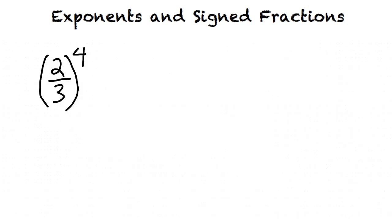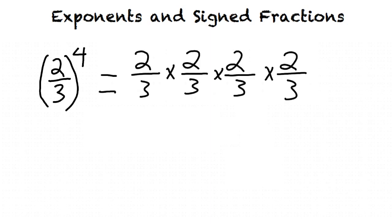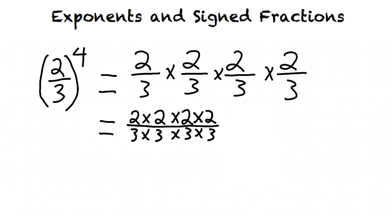2 thirds to the fourth power. Using our rules for exponents, we can rewrite this as 2 thirds times 2 thirds times 2 thirds times 2 thirds. Now, using our rules for fraction multiplication, we can rewrite this as 2 times 2 times 2 times 2 over 3 times 3 times 3 times 3.